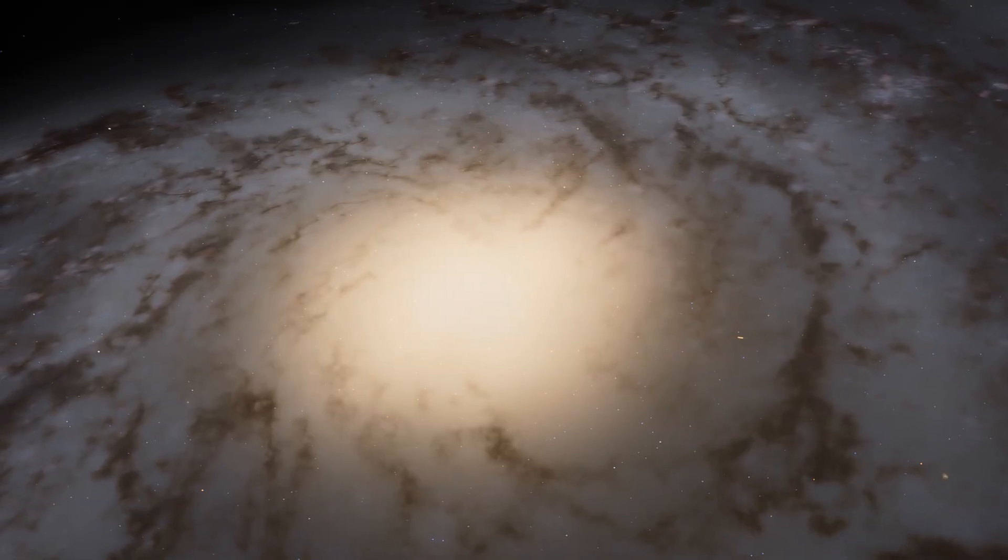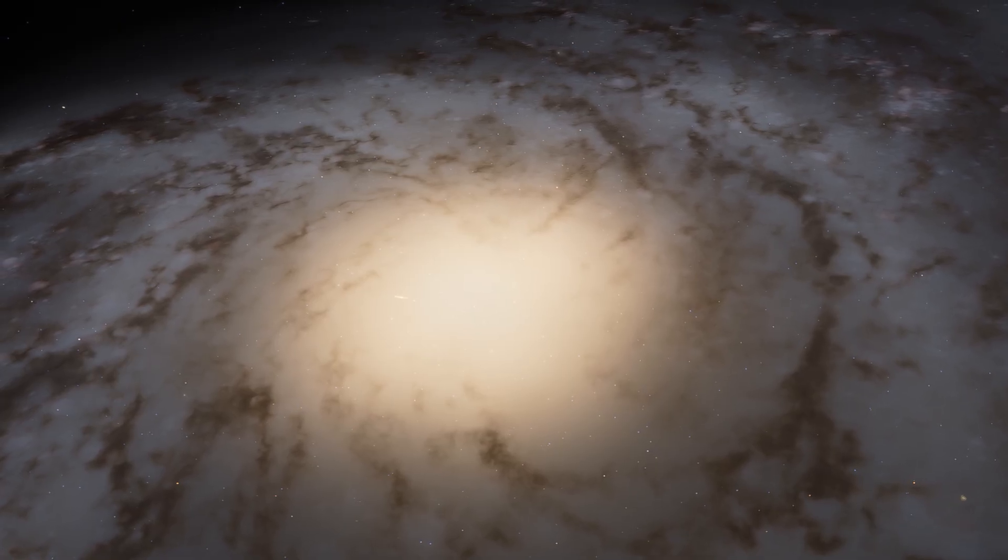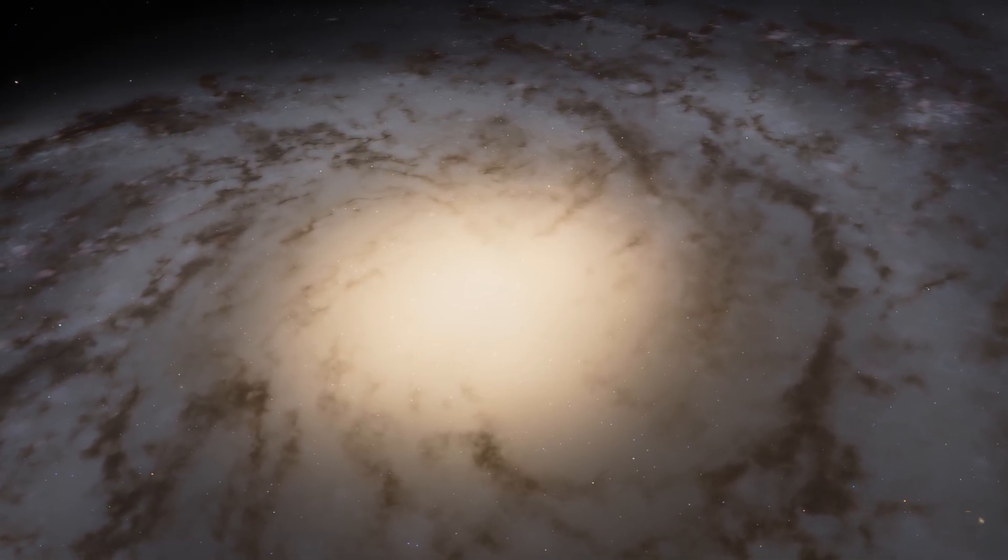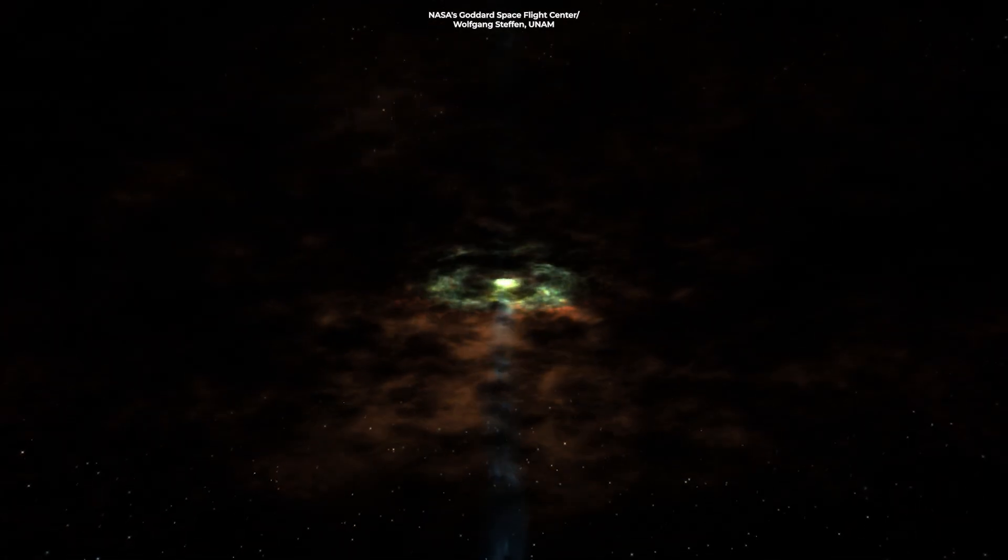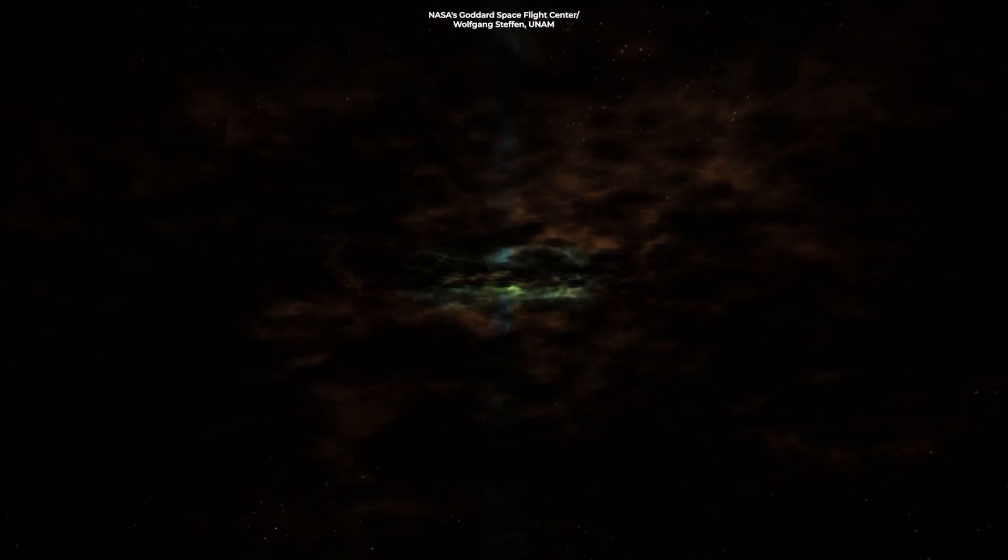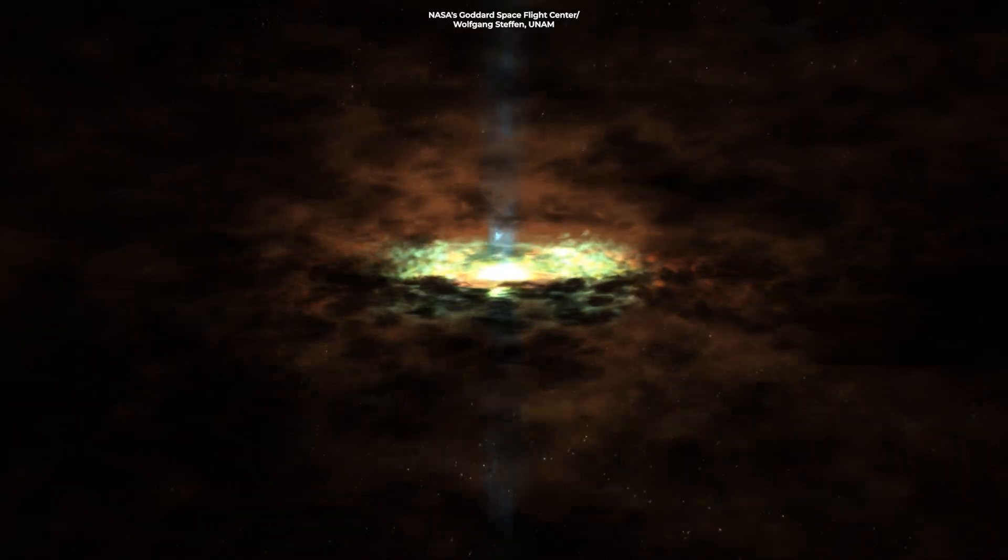But this feeding process is not constant, and it all depends on how much matter is available for the black hole to consume. If the nearby matter is clumpy and irregular, we can see the AGN turning off and on, or flickering.